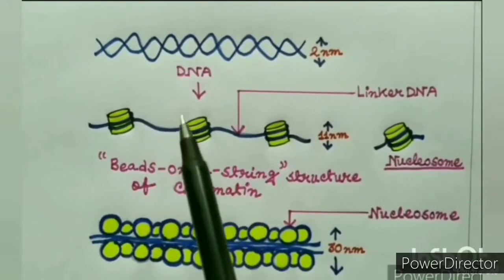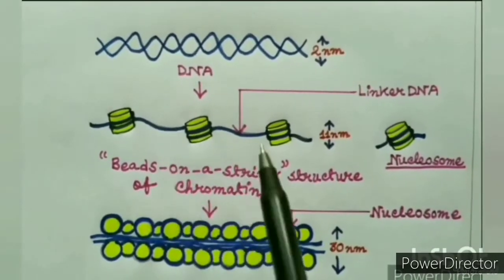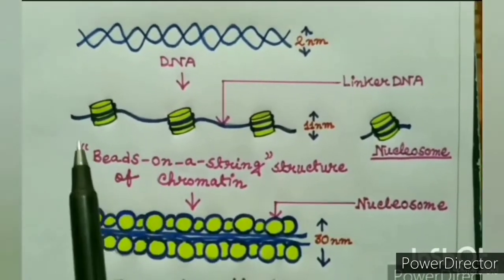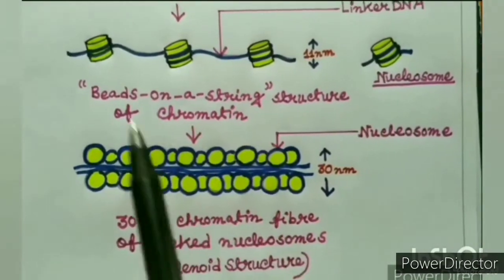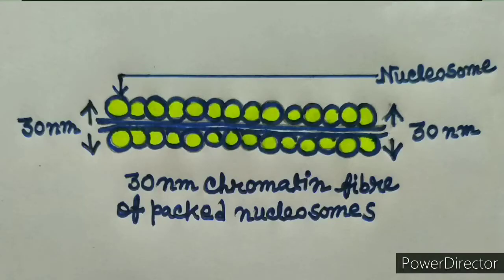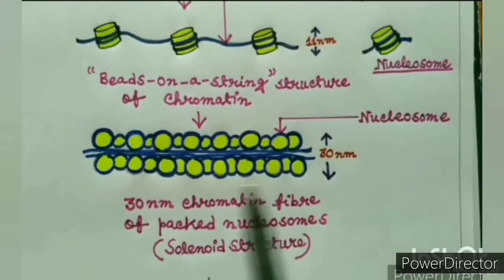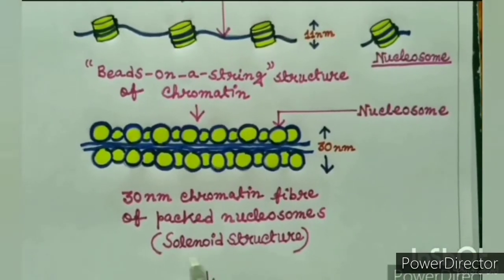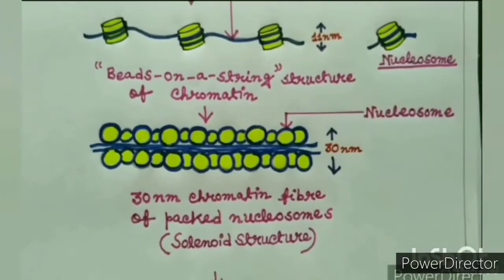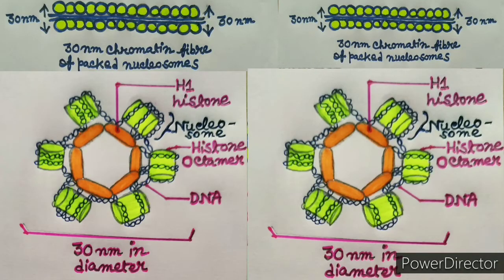Further condensation of chromatin starts after the formation of the beads-on-a-string structure. The beads-on-a-string structure in turn coils into a 30 nanometer diameter fiber that packs the nucleosomes very tightly. This 30 nanometer diameter fiber is called the solenoid structure of chromatin. This next level of condensation is brought about by histone H1 proteins, which help to stabilize this structure.